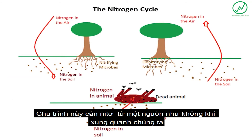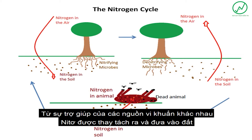This cycle takes nitrogen from one source, such as the air all around us, and alters the form of that nitrogen with the help of the microbes, so that it can be used by a completely different source, such as plants.